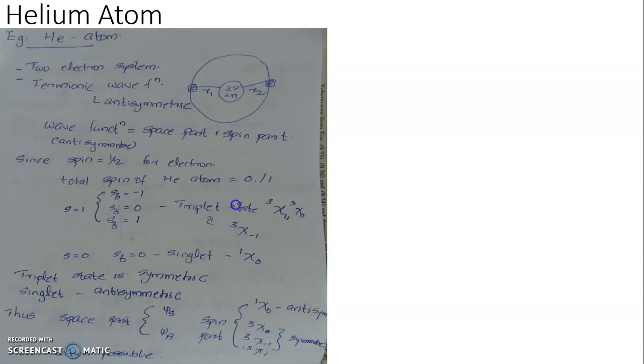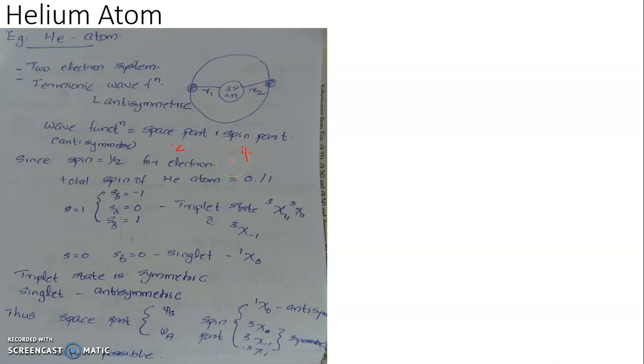So the spin function has 4 choices total, and the space part has 2 choices. Overall, 2 times 4 is equal to 8. So the wave function can represent 8 possible combinations.